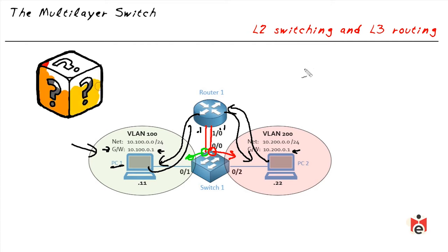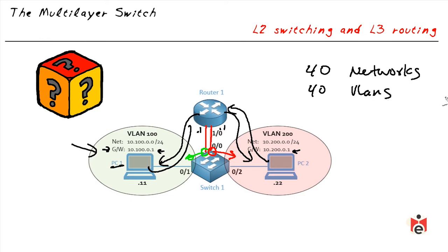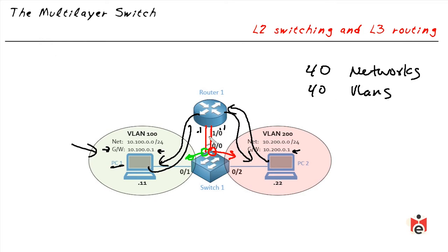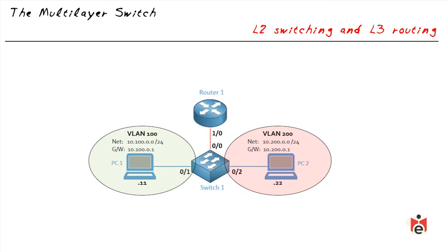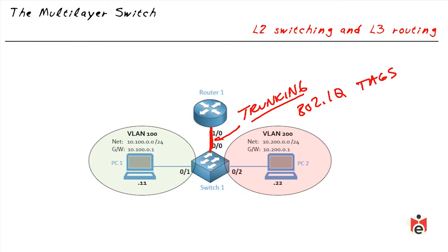What if we have 40 networks equating to 40 VLANs and want to route between all of them? Using physical interfaces for all 40 VLANs means 40 ports tied up on the switch and 40 physical ports on the router — a huge waste of ports. The solution is to use one or two ports for redundancy and do trunking on that link.